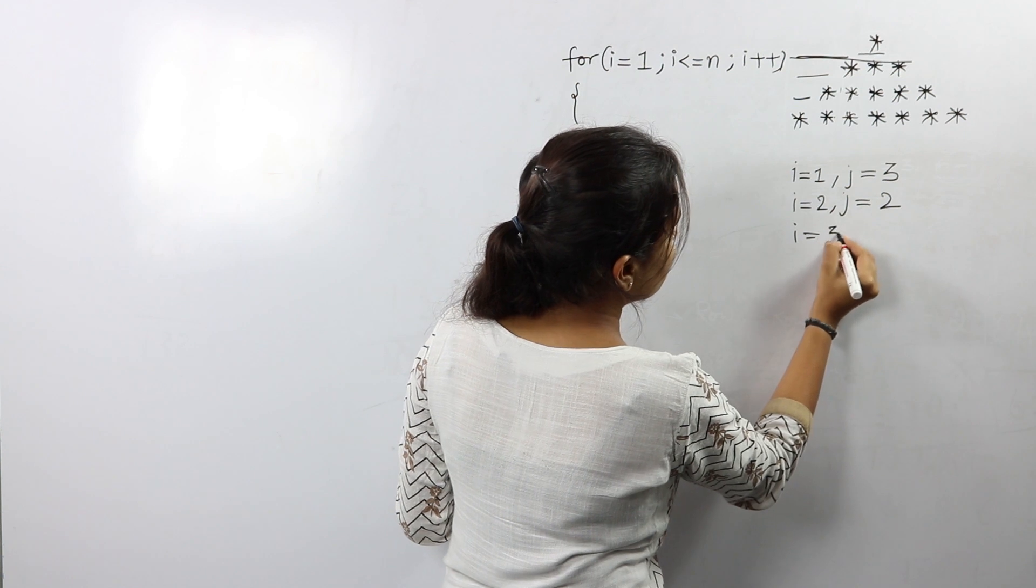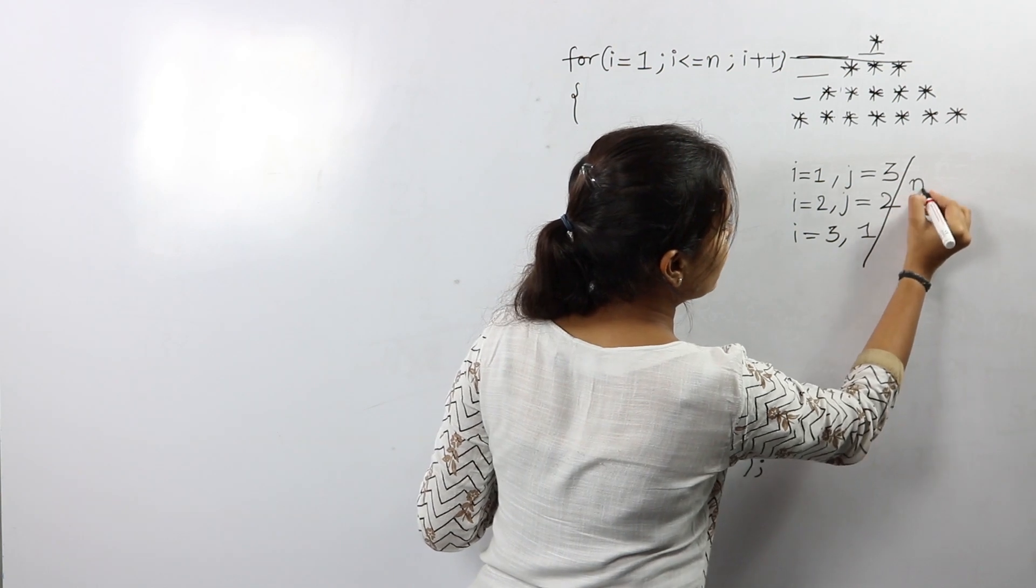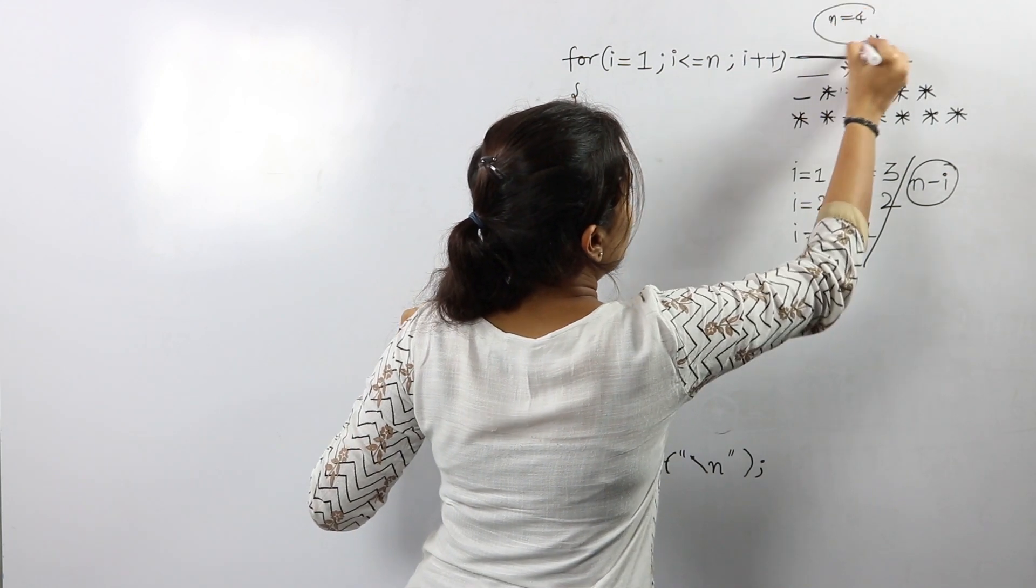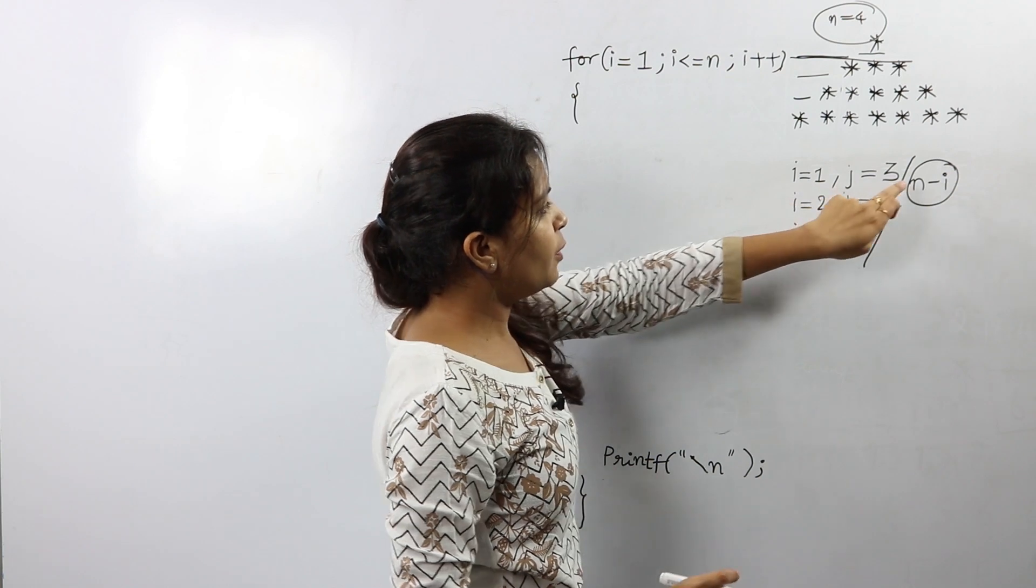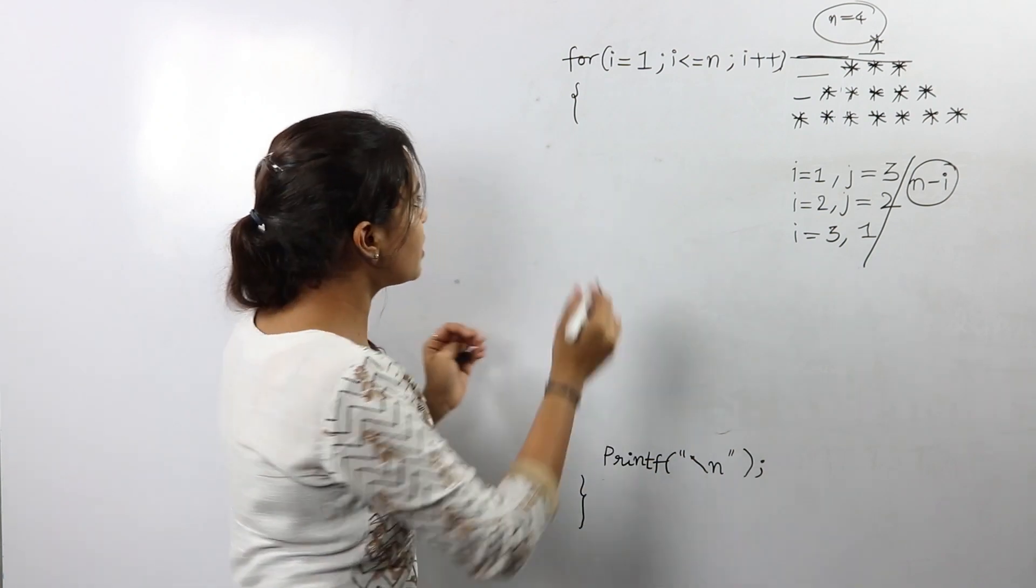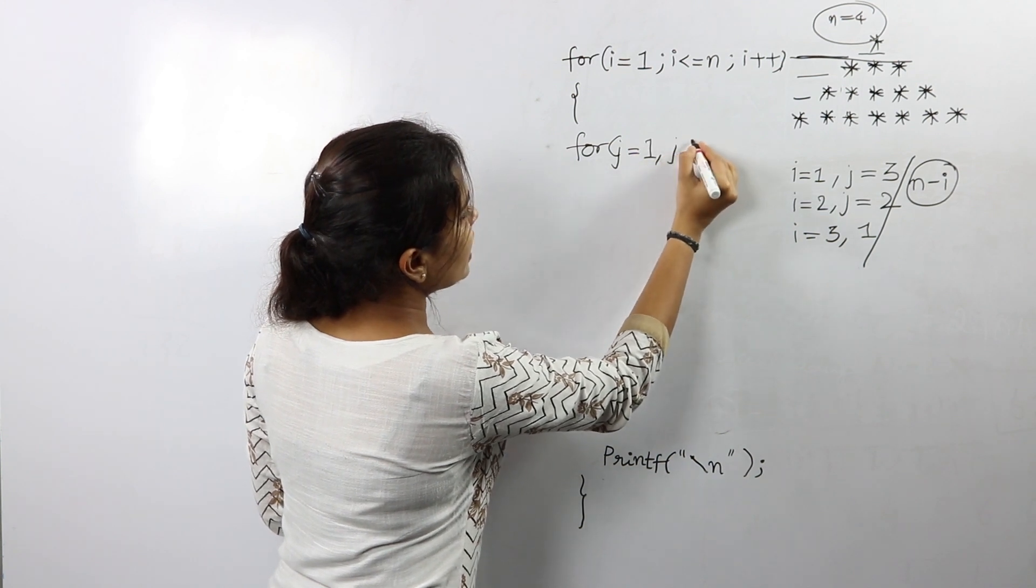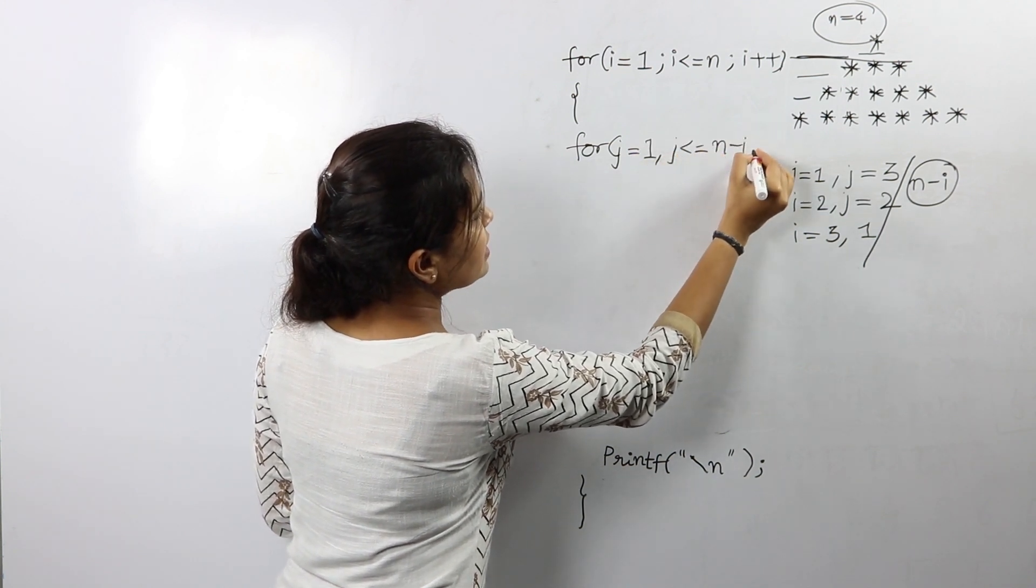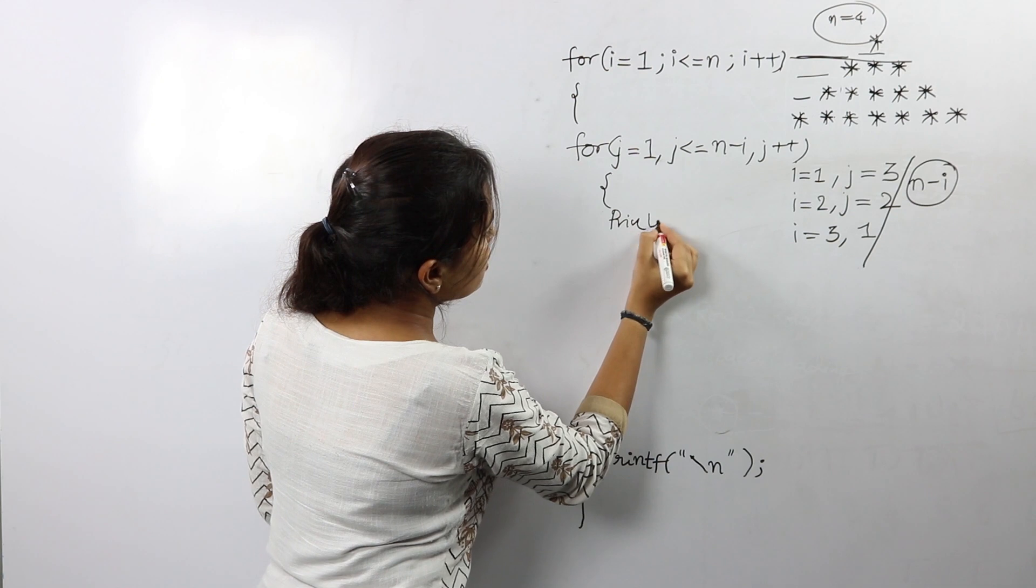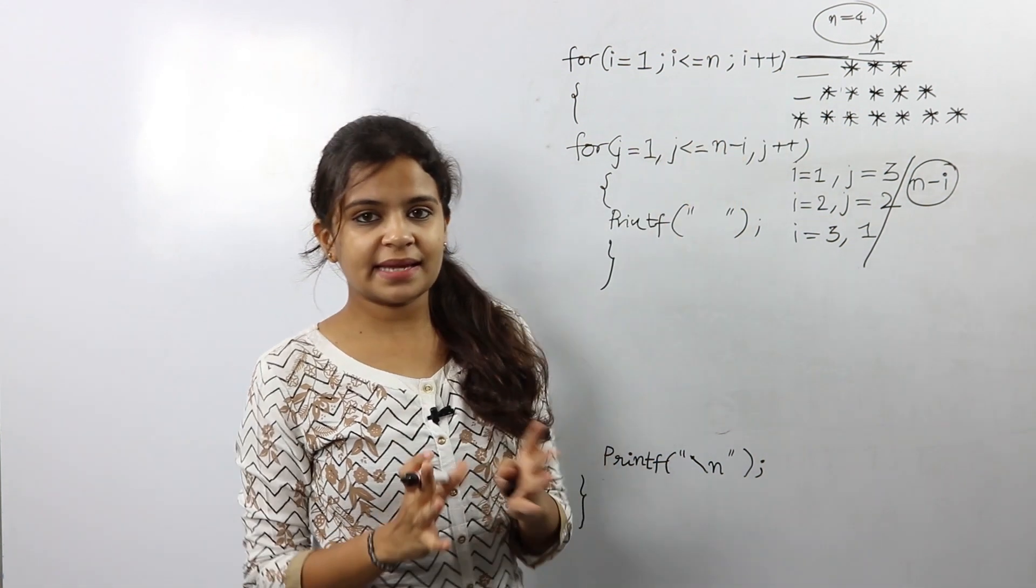When i is equal to 3, the number of spaces required is 1. So this pattern can be generalized and written as n minus i. So since in this case our n is equal to 4, 4 minus 1 will give us 3, 4 minus 2 will give us 2, 4 minus 3 will give us 1. So this pattern works. So our jth loop will go from j is equal to 1 to j less than or equal to n minus i, j plus plus. Its purpose is to simply print spaces. So there is nothing inside the printf statement. So well we are done with spaces as well.